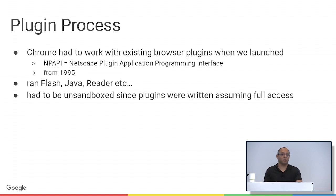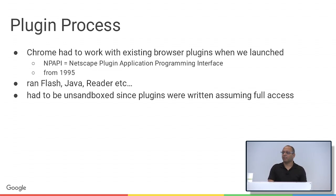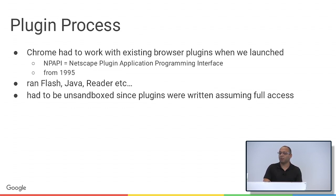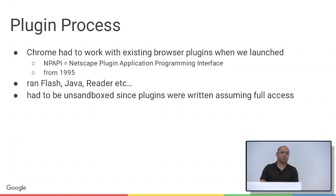Another process type we launched was for plugins. Since Chrome was a secret project, we couldn't tell anyone we were working on it, which meant at launch we had to support all the plugins that users and web content depended on — things like Flash, Java, and Adobe Reader. If we didn't support them, a lot of web content wouldn't render. So we figured out how to run these in multi-process, even though that was never how they were intended to run. At the same time, we couldn't sandbox them because this was third-party code written with the assumption it has full access to your machine.